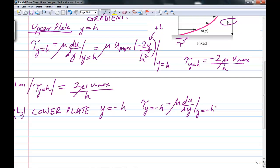The derivative is the same. So tau at y equals minus h is going to equal, now we substitute minus h into this expression. And you're going to get positive 2 mu u max upon h. That's the shear stress at the bottom plate.